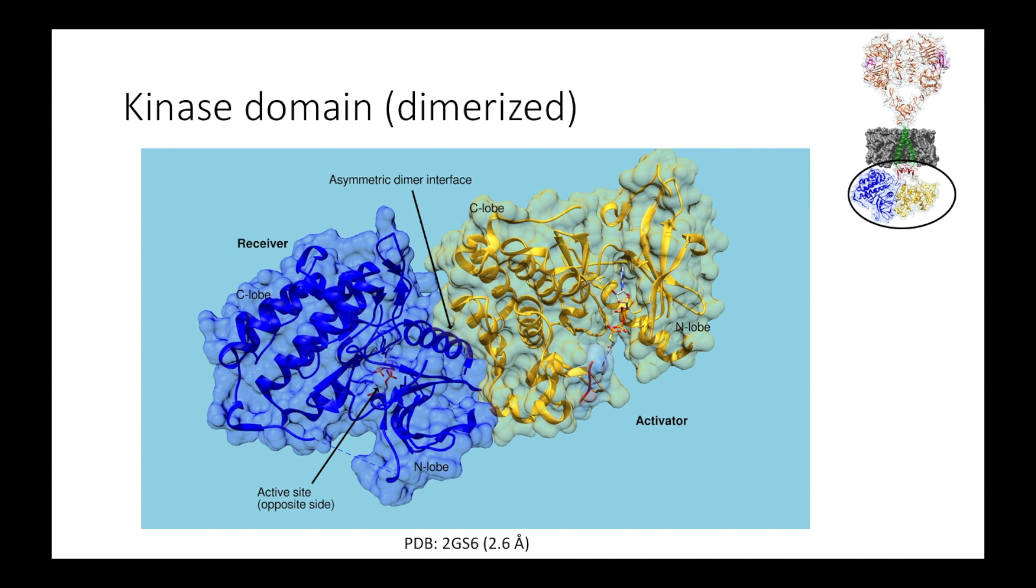Here we can see a crystal structure of the asymmetric kinase dimer. On the right in yellow is the activator kinase, and the receiver is on the left in blue. Each kinase domain consists of two lobes, the C-lobe and the N-lobe. The C-lobe is bulkier and more rigid than the N-lobe. And the dimer interface is between the C-lobe of the activator and the N-lobe of the receiver. The kinase active site is located here, in the cleft between the two lobes.